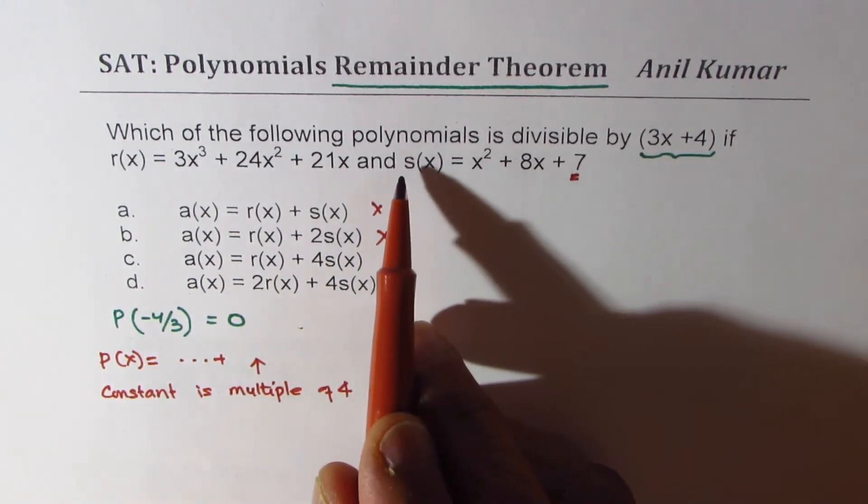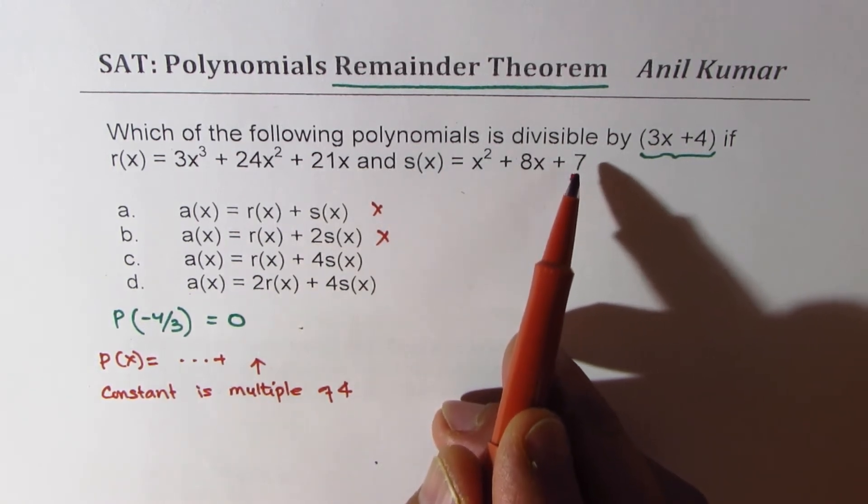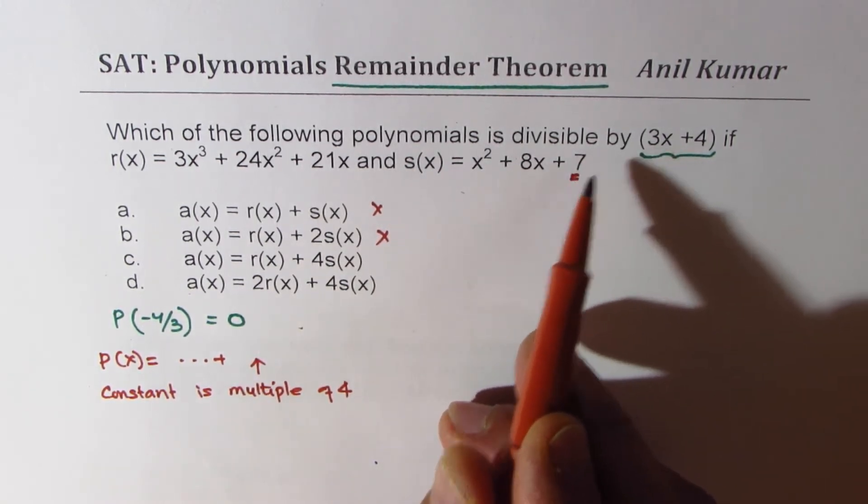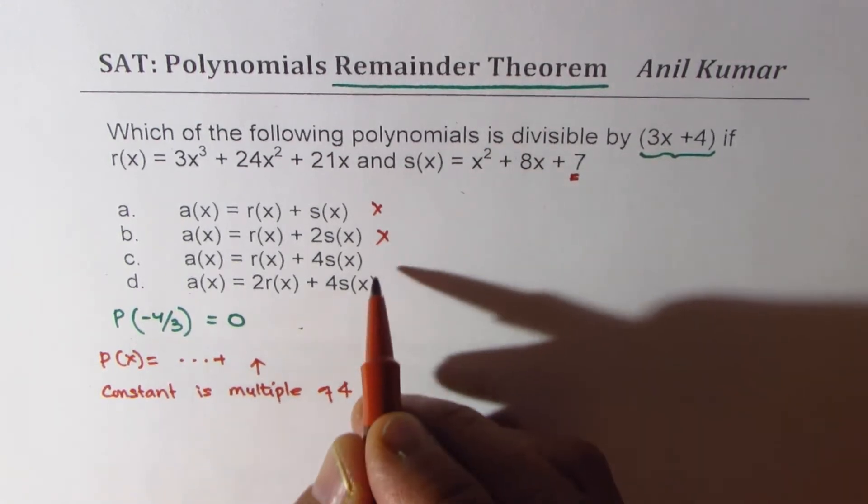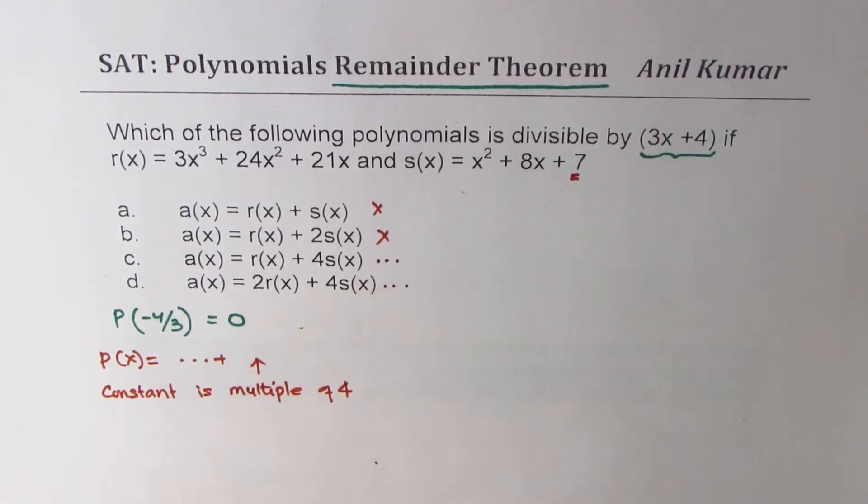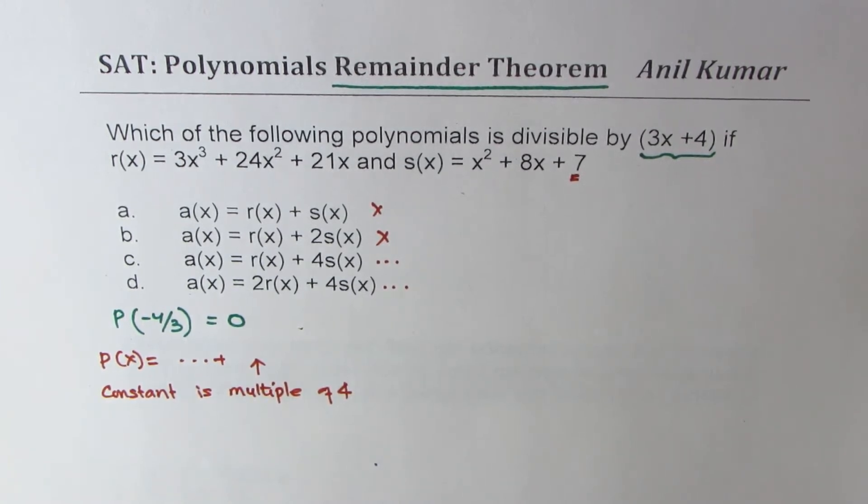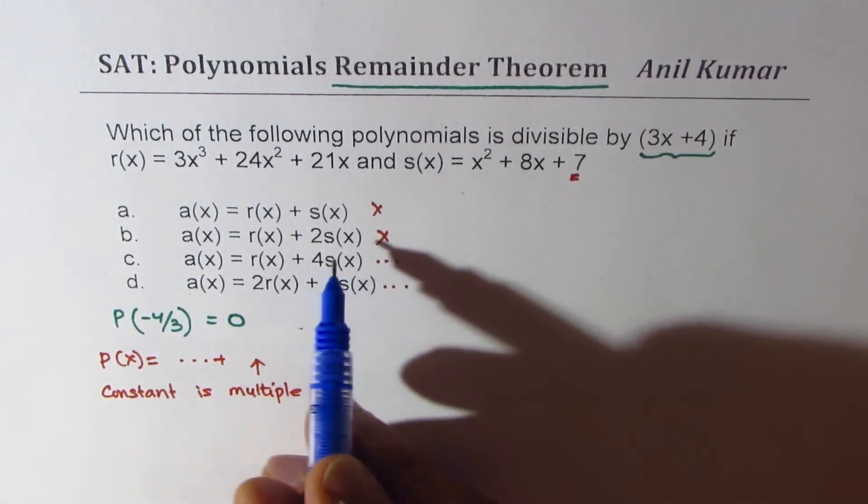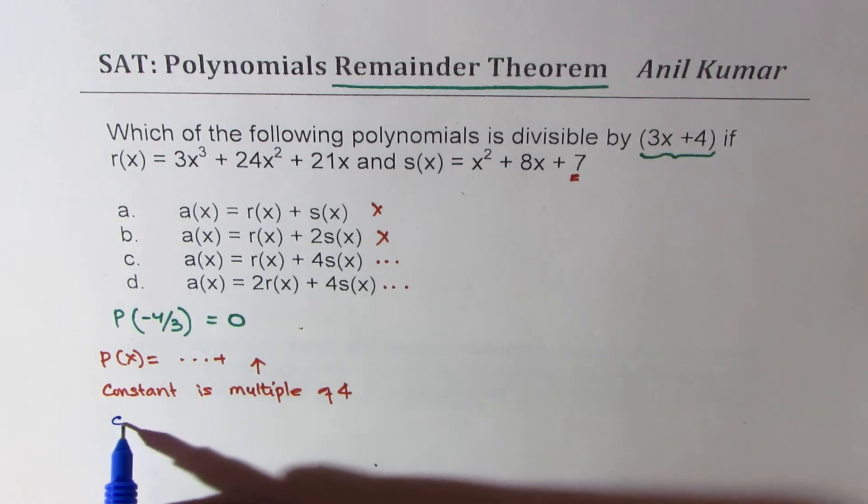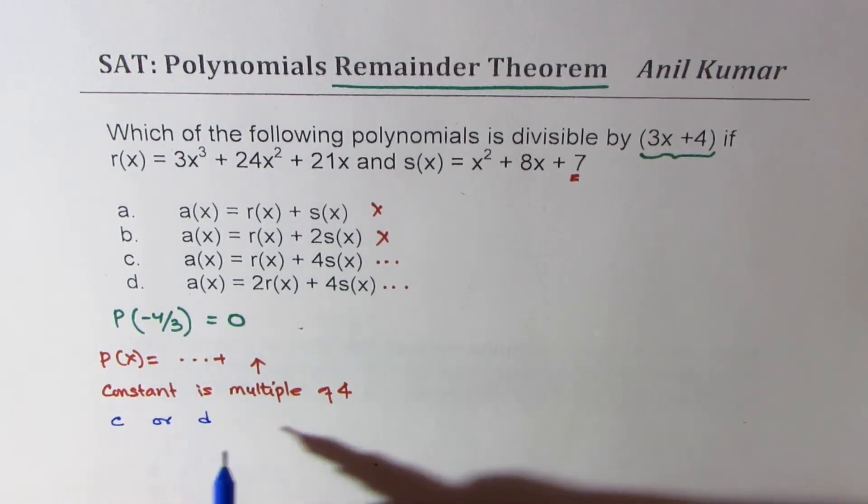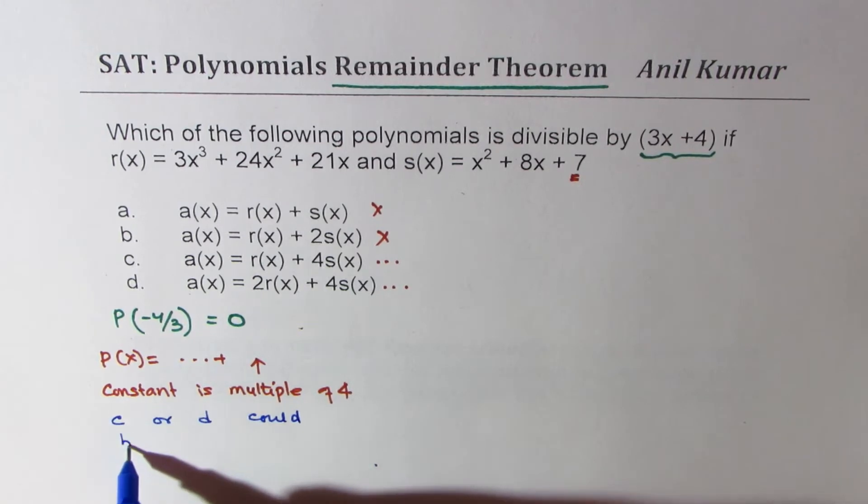But option c and d has 4 times s. So when we multiply s(x) with 4, we will get 28 here. That will be a multiple of 4. So these two could be our solution. So from elimination, we say c or d could be solution.